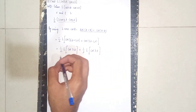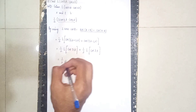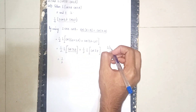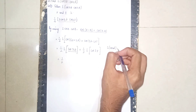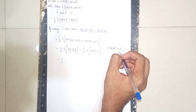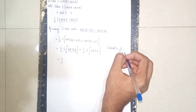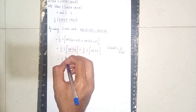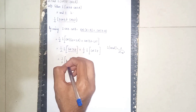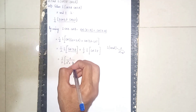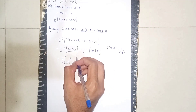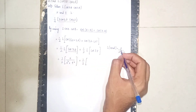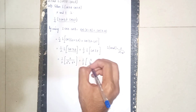Now apply the formula. Remember: Laplace of cos(at) = s / (s² + a²). So one-half, open the bracket: s / (s² + 7²). Now close the bracket, then plus one-half, open the bracket — same formula — s / (s² + a²), where a is 3, so it becomes 3 squared.